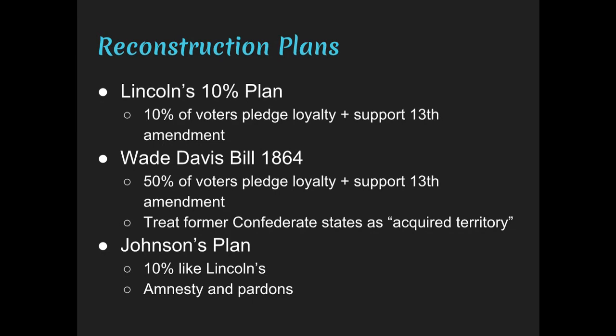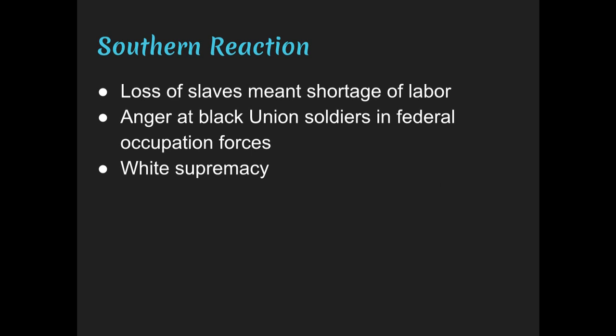Republicans were outraged that the planter elite were once again in control of the South. White Southerners had a window of opportunity from 1865 to 1866 while Congress was out of session, but their actions provoked a strong congressional reaction. Former Confederate leaders began being elected to high offices — the Confederate vice president Alexander Stephens became a senator from Georgia, and many Confederate generals were elected to high offices. Violence against blacks began in the summer of 1865, the KKK was founded in Tennessee, and northerners became convinced that Southerners had not learned their lessons.